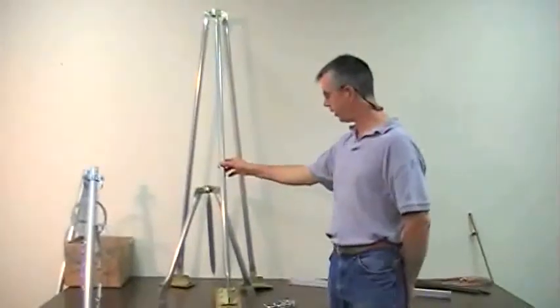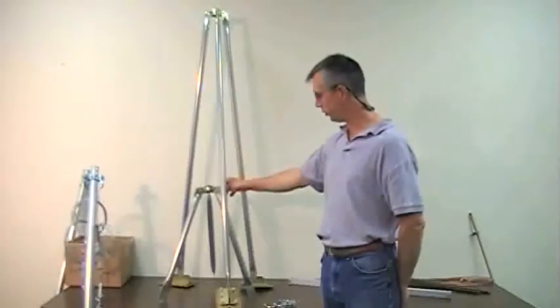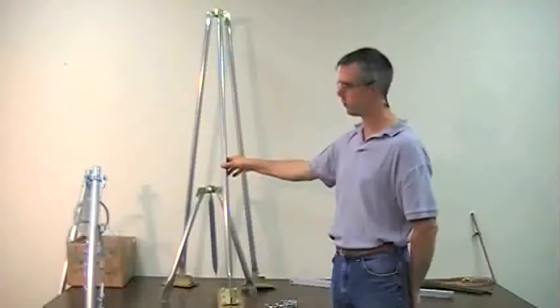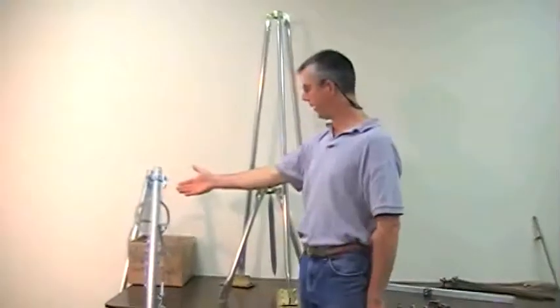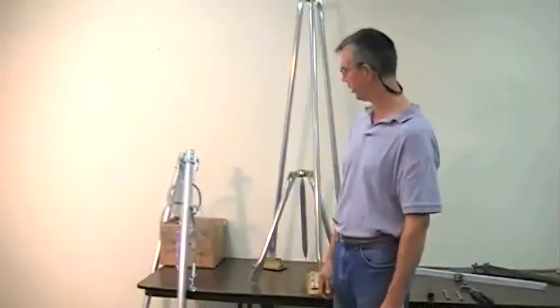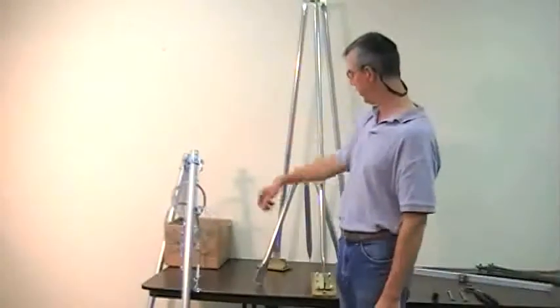This is the tripod legs, both sets, short and long. We'll see how that's assembled together momentarily. Here we have our upper mast with a lot of pieces assembled onto it that I'll get into in a moment. Our lower mast.